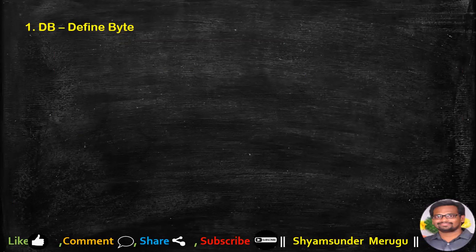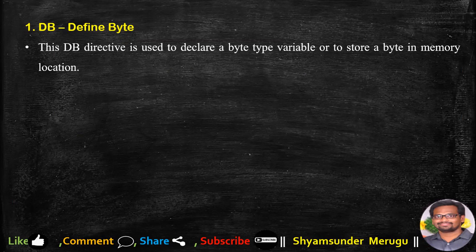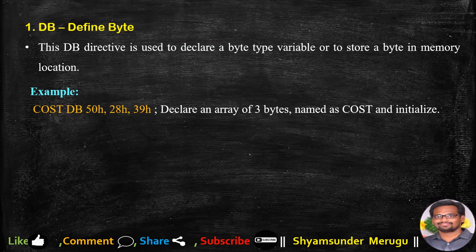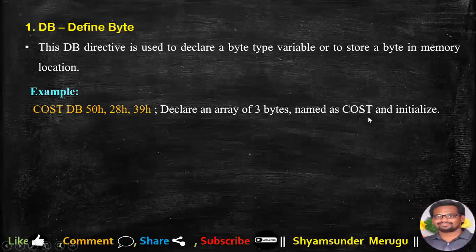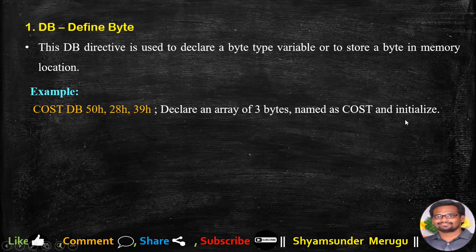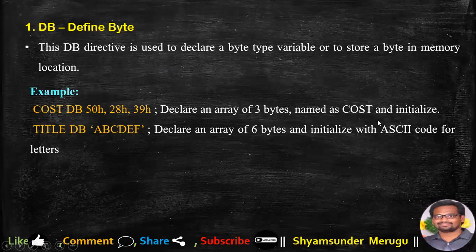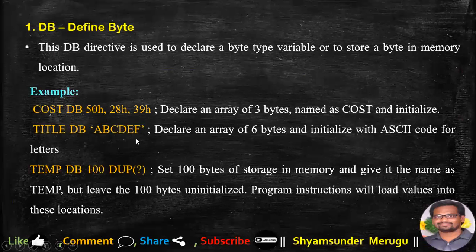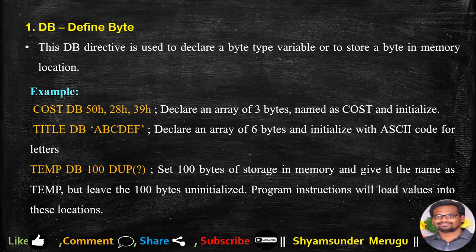The first assembler directive is DB, which stands for Define Byte. The DB directive is used to declare a byte-type variable or to store a byte in a memory location. For example, 'cost DB 50H, 28H, 39H' declares an array of 3 bytes named 'cost' and initializes them with those values. 'title DB A, B, C, D, E, F' declares an array of 6 bytes initialized with ASCII codes for each letter. 'Temp DB 100 DUP' sets 100 bytes of storage in memory named 'temp' but leaves those bytes uninitialized; program instructions will load values into these locations.